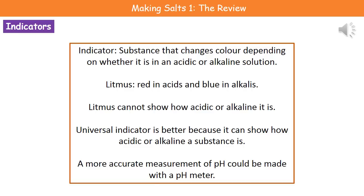Universal indicator can show us how acidic or alkaline the substance is, because we get that range of different colours that allows us to associate that with a particular pH. That does still involve trying to match colours, which isn't always easy, so a far more accurate measurement of pH could be made by using a pH meter.